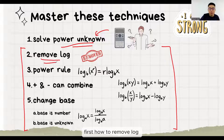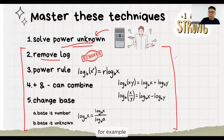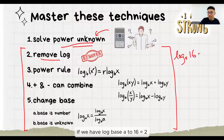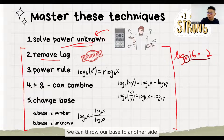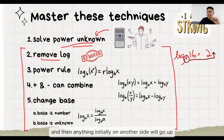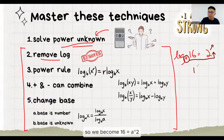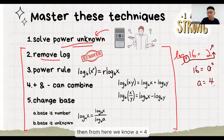First, how to remove log. For example, if we have log base A to 16 equals 2, we can remove the log by throwing the base to another side. We throw our base to another side, and then anything initially on the other side will go up. So it becomes 16 equals A power 2. Then from here, we know A equals 4.